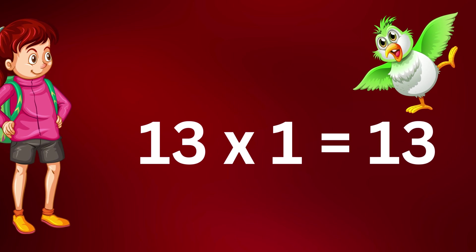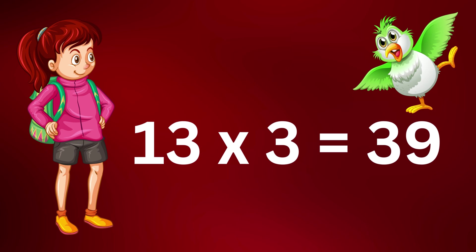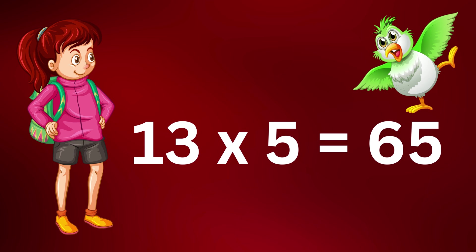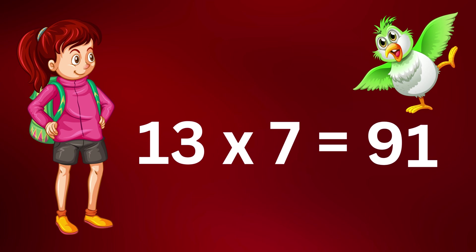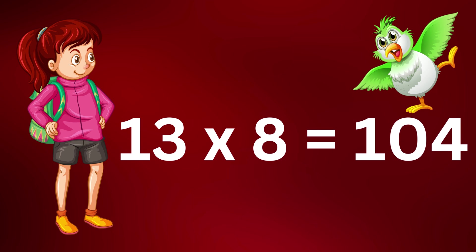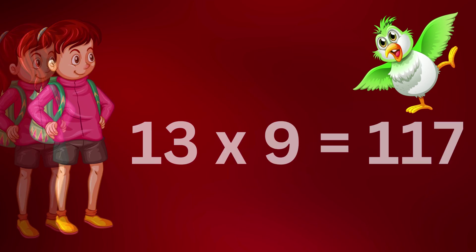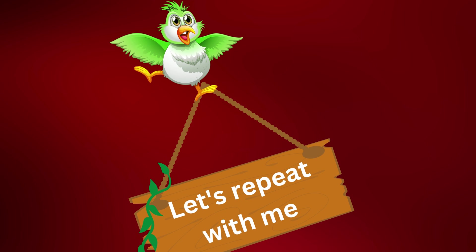Table of 13: 13 1's are 13, 13 2's are 26, 13 3's are 39, 13 4's are 52, 13 5's are 65, 13 6's are 78, 13 7's are 91, 13 8's are 104, 13 9's are 117, 13 10's are 130.